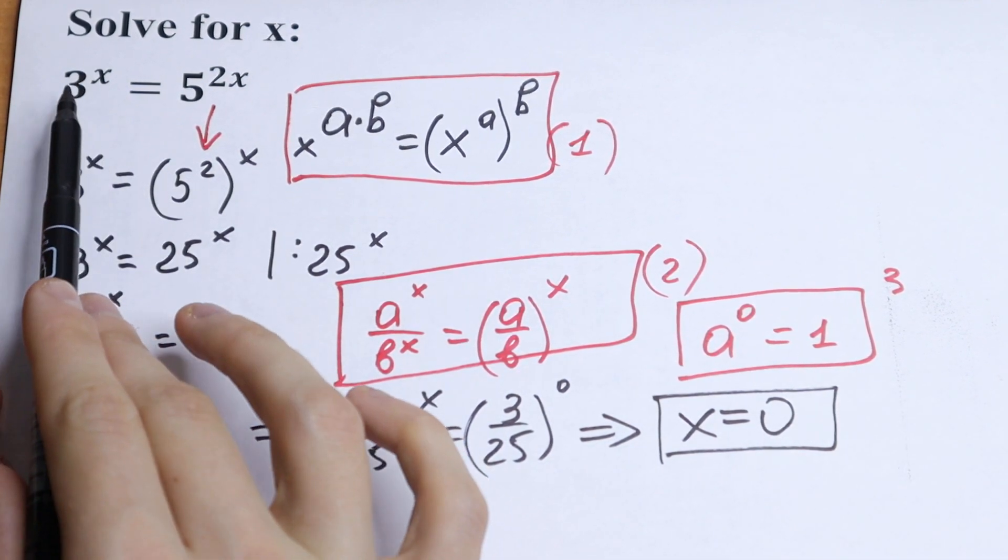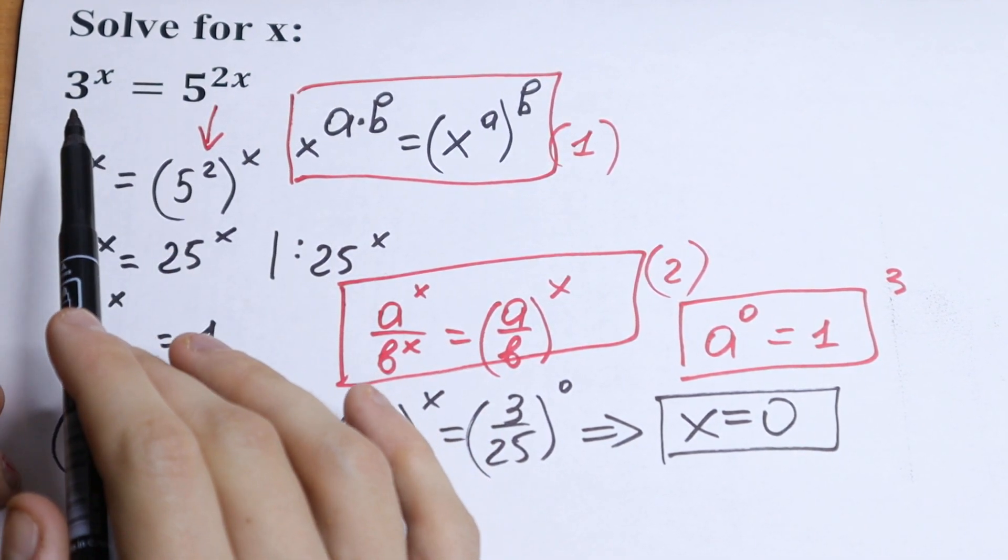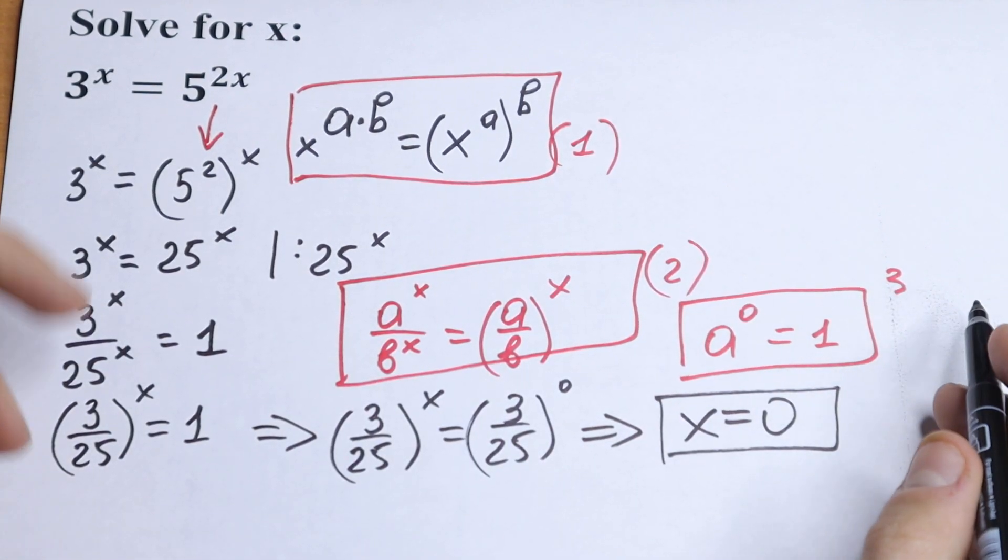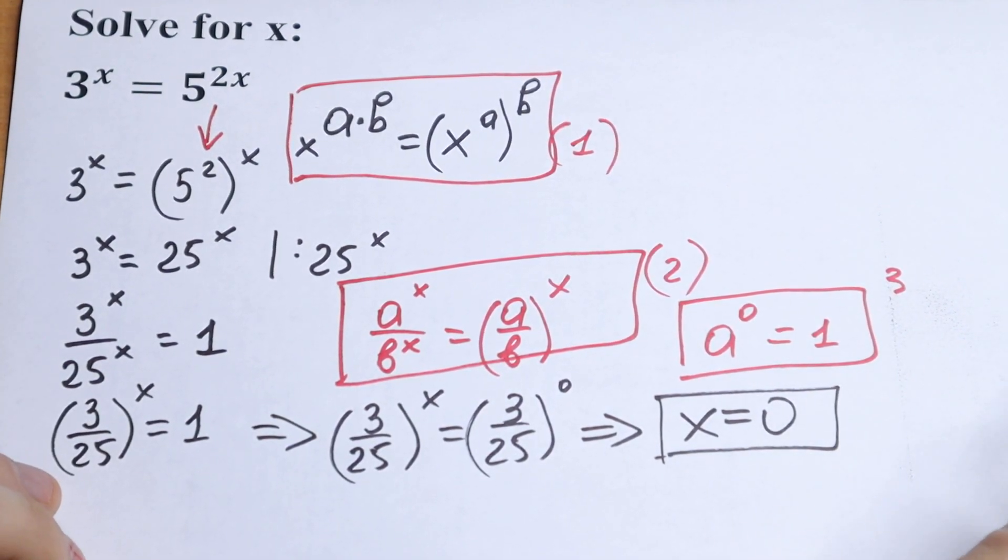We can check it real quick. 3 to the 0 power equals 5 to the 0 power. Of course this is true because we will have 1 equals 1 and this is our one and only root.